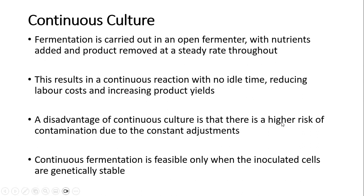A disadvantage of continuous culture is a higher risk of contamination, because nutrients are constantly being added and product constantly being removed, requiring repeated opening of valves — creating chances of introducing contaminants from the atmosphere if not done carefully. Additionally, continuous fermentation is feasible only when the inoculated cells are genetically stable. Since cells are growing and dividing continuously over a long period, they can mutate, so this process is more applicable to strains that are genetically stable and do not change significantly with continued cell division.